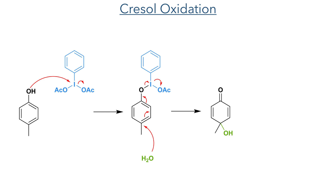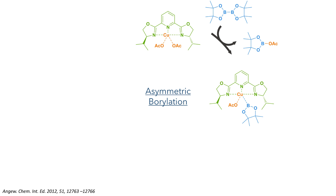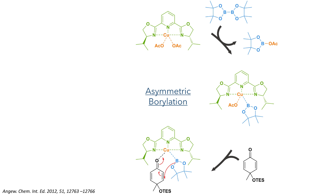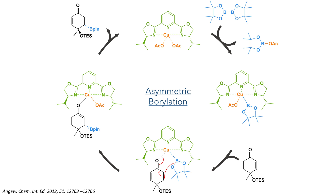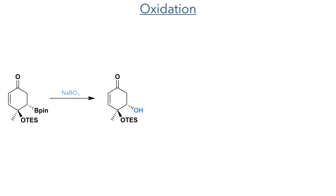Paracresol was first reacted with diacetoxy iodobenzene, which activates the hydroxyl group and allows for water to attack at the para position, installing a hydroxyl group and completing the formation of the dienone in a 70% yield. This was then protected using TES chloride and the molecule was taken forward to an asymmetric borylation reaction. This reaction uses a chiral pi-box ligand together with copper acetate, which first reacts with bis-pinacolato-diboron to form the borylated copper complex. This coordinates to the ketone and allows for the conjugate addition of the B-pin ligand in an asymmetric fashion. The product was not isolated and was instead oxidised with sodium perborate to install the hydroxyl group on the face of the ring anti to the O-TES group. The TES group was then deprotected with TBAF, producing the diol in a 75% yield with a 94% ee.